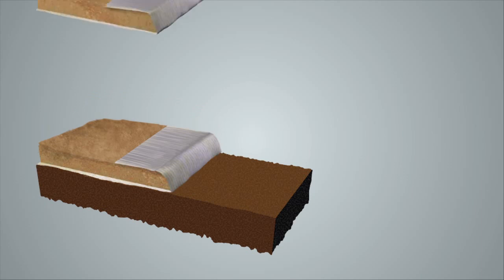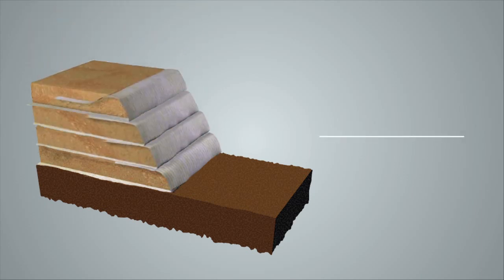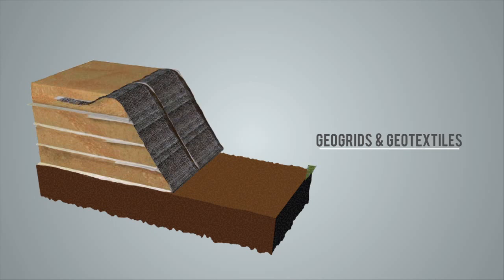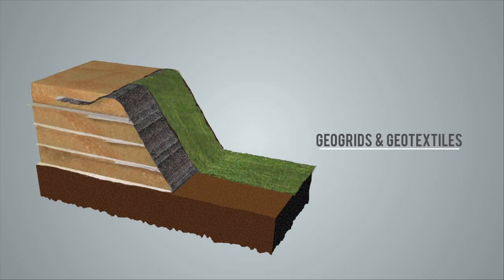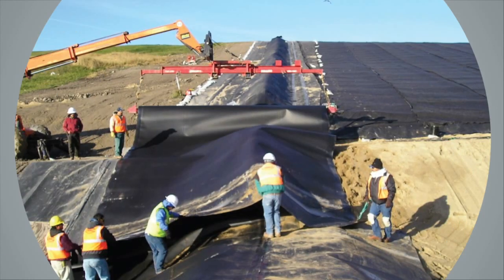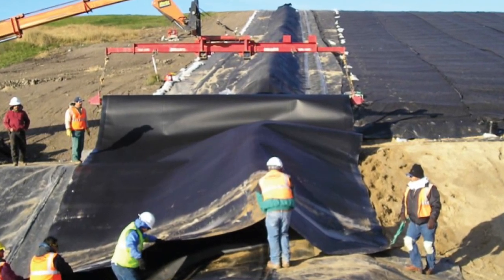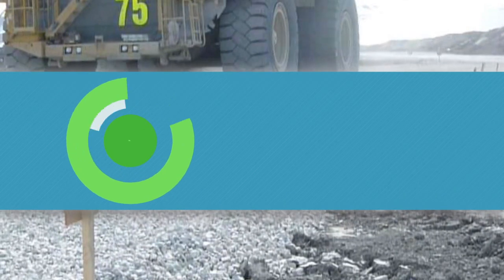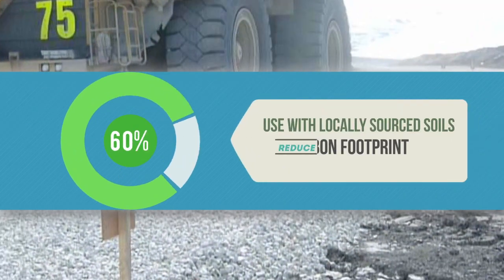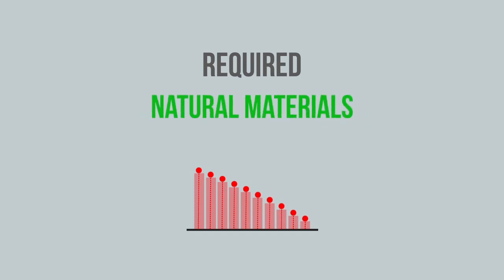A key element in many construction projects is accommodating challenging terrain that requires walls and steep slopes. Geo-grids and geo-textiles work in concert with soils to construct safe, resilient, long-lasting reinforced structures. Geosynthetics are used to achieve varied geometries and desired aesthetic appearances. When used with locally sourced soils, the result is the significant reduction of the associated carbon footprint, as the otherwise required shipment of off-site construction materials is avoided. Geo-synthetic reinforcement represents a low-cost solution.